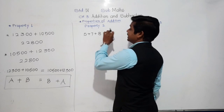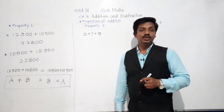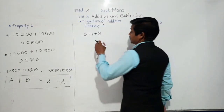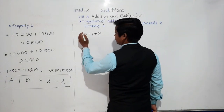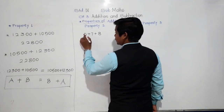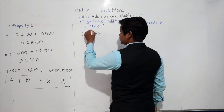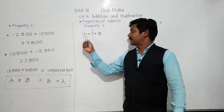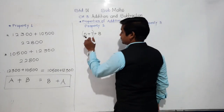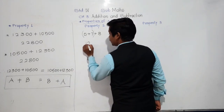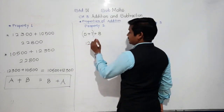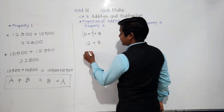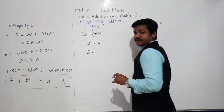Adding 5 plus 7 in the bracket gives 12, and then adding 8: 12 plus 8 equals 20. Now suppose another student adds the last two numbers first: 7 plus 8. He gets 15, and then 5 plus 15 is 20.